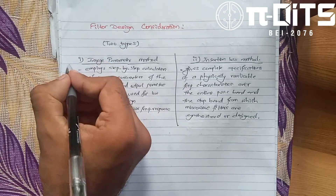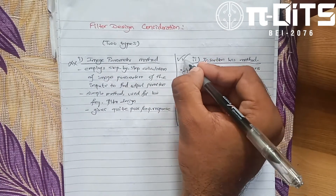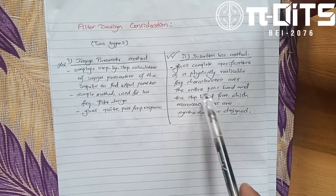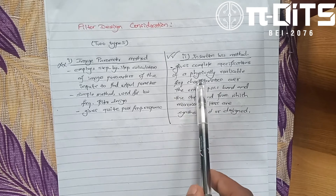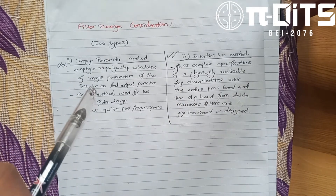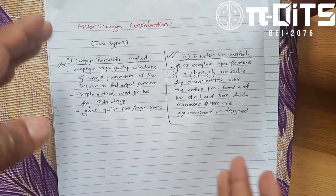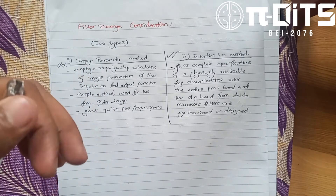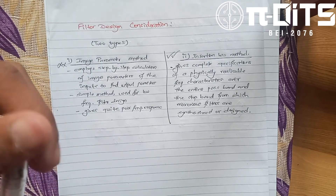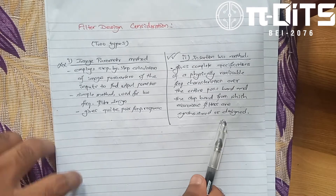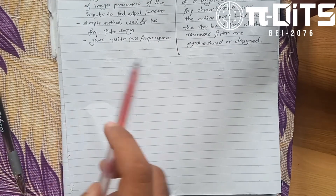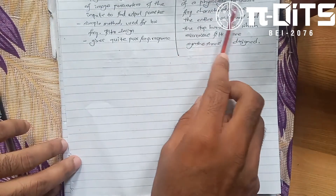The insertion loss method is very important. This method provides a complete specification of physically realizable frequency characteristics, defining pass-band and stop-band. This method is synthesized or designed using the insertion loss method.